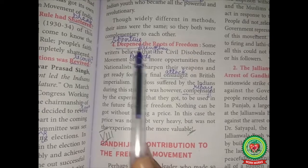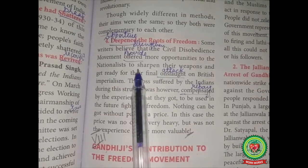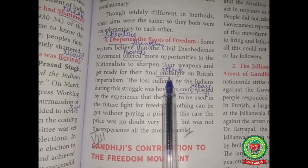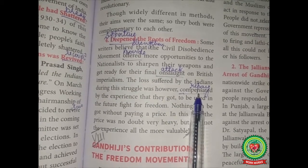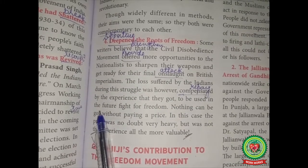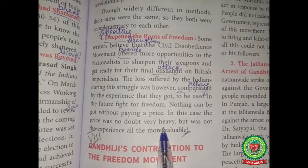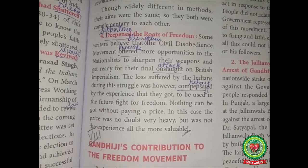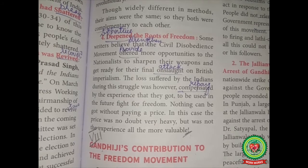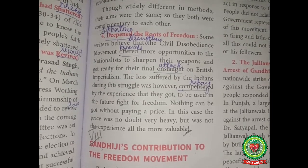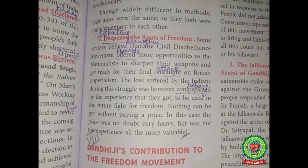Point 4: Deepen the roots of freedom — deepen means strengthen. Some writers believe that the Civil Disobedience Movement offered more opportunities to the nationalists to sharpen their weapons and get ready for their final onslaught — onslaught means attack — on British imperialism. The losses suffered by Indians during this struggle were compensated by the experience gained for future fights for freedom. Nothing can be achieved without paying a price; the price was heavy, but the experience was all the more valuable. Thank you.